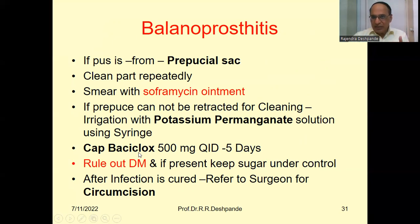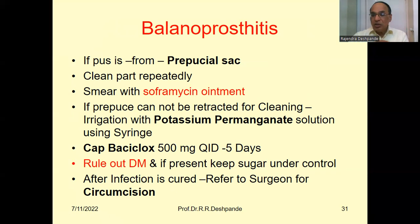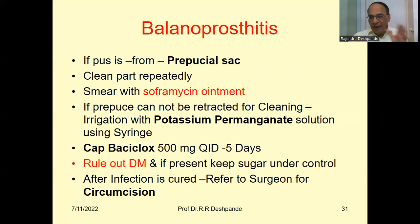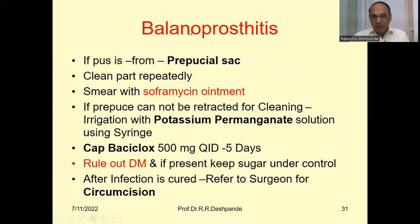Capsule Bacilox — that is amoxicillin and cloxacillin — 500 mg, four times a day (QID) for a minimum of five days. Also rule out: if the patient is suffering from balanoprosthitis, there may be a probability of having diabetes mellitus. Do the blood sugar fasting and post-glucose, or glucose tolerance test (GTT), or modified glucose tolerance test (MGTT) to rule out diabetes. If the patient already has diabetes, control blood sugar even with the help of insulin. After the infection has been cured by Bacilox, you can refer the patient to a surgeon for circumcision to avoid further recurrence of balanoprosthitis.